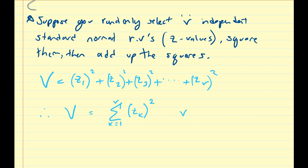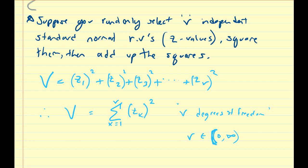Here, nu represents nu degrees of freedom. Because we're randomly selecting a series of independent standard normal variables, that choice of selection gives us our degrees of freedom. And nu can be anything from 0 to infinity, but let's assume we don't include 0 because selecting nothing is trivial.